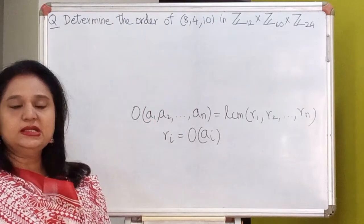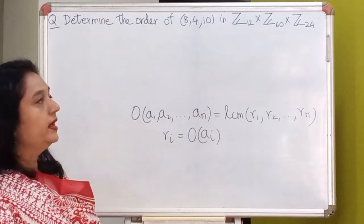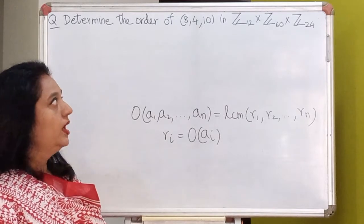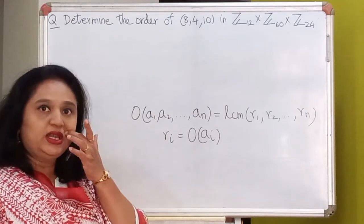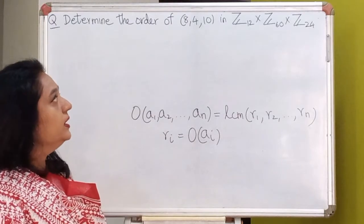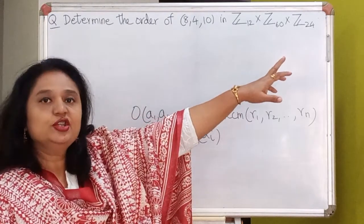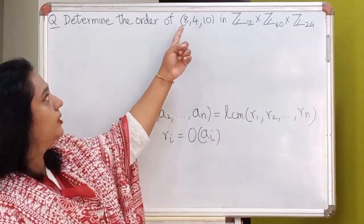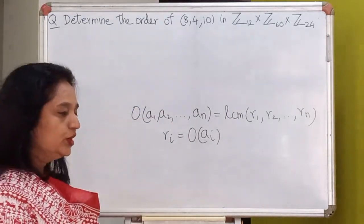I start with an easy problem. Let's look at the direct product of Z12 with Z60 and Z24. In this direct product, I wish to find out the order of the triple (8, 4, 10).